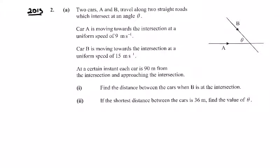Here we have 2013 relative velocity, Question 2a. We've got this diagram with car A traveling in this direction along the i-axis and car B traveling down in this direction with an angle theta.